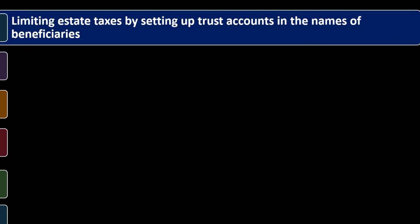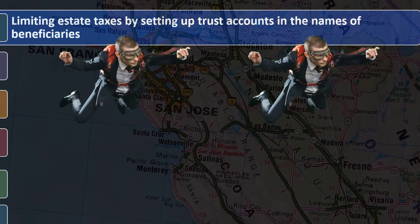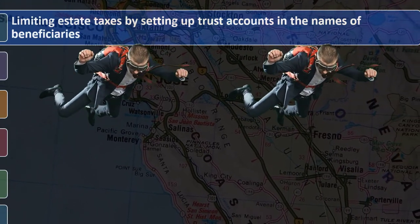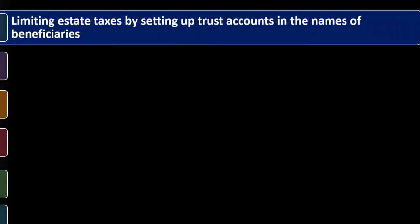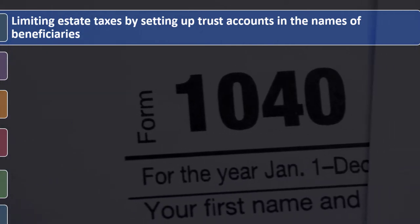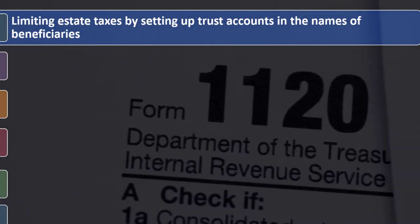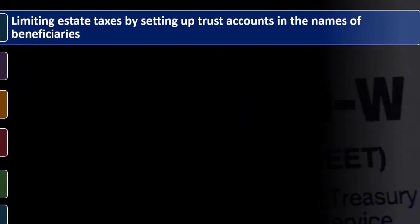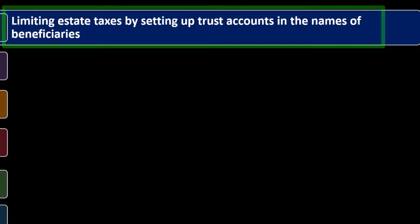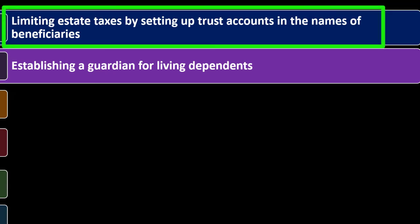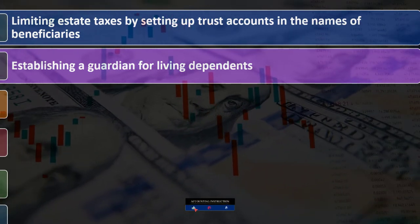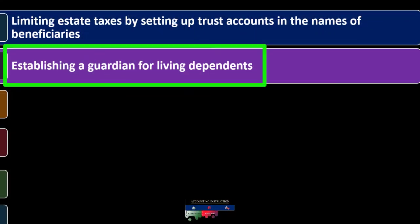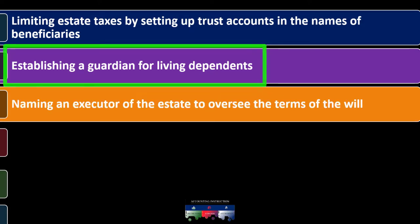Limiting estate taxes by naming beneficiaries is more impactful when the estate is large, because then you're more likely to be subject to estate taxes requiring more complex planning. If you're under a certain threshold, that may not be as necessary. Keep in mind the dollar value of the estate and how much you need to do to manage it after death. Also important: establishing a guardian for living dependents.